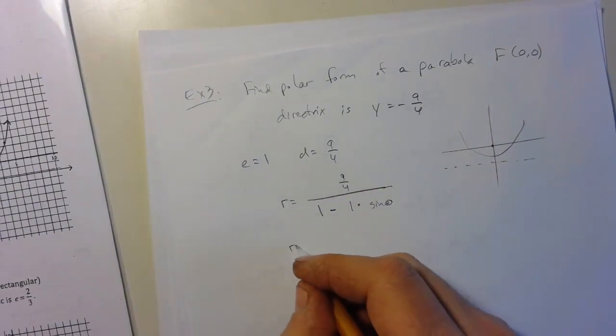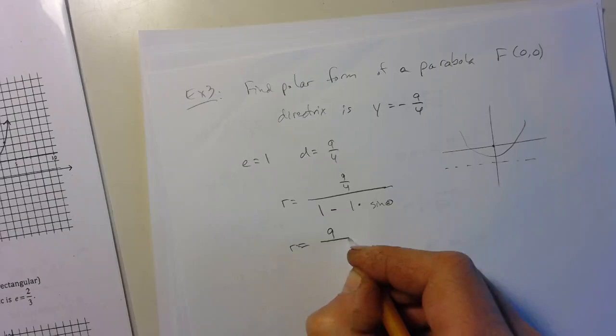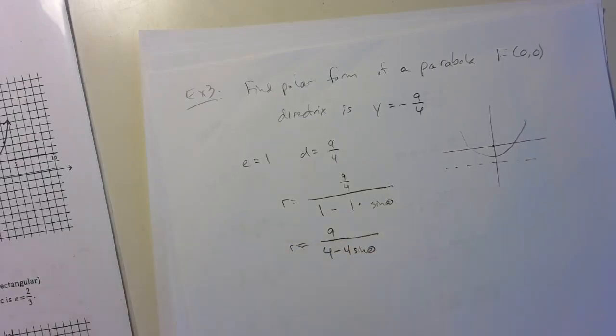Yes, it's a compound fraction, so I'll multiply top and bottom by four. So that's not a compound fraction. And I get the equation. That's it. It's all set.